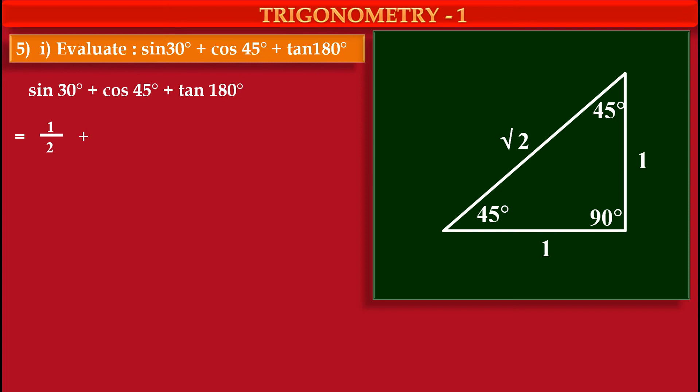Now see, cos 45° means what? Cos 45° means adjacent side upon hypotenuse. Now here, adjacent side of 45° is 1 and hypotenuse is root 2. So we can write value of cos 45° as 1 upon root 2.